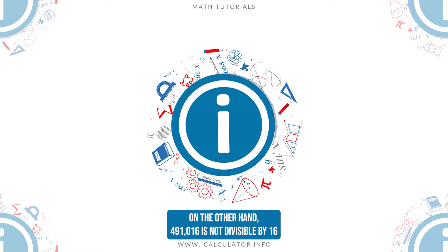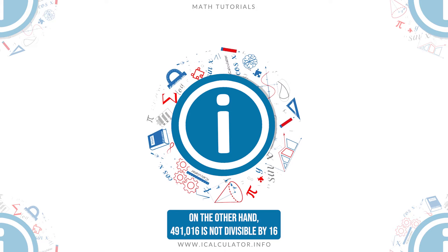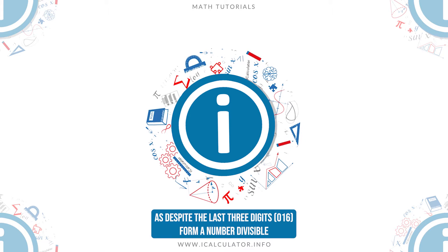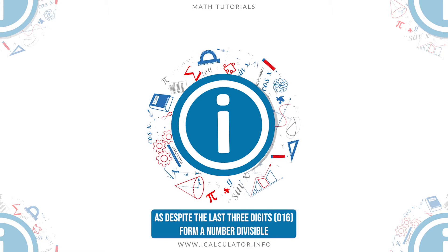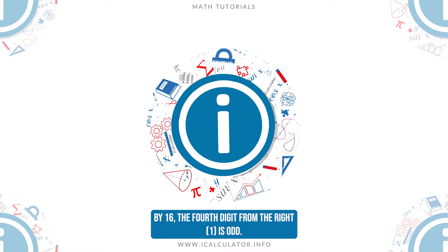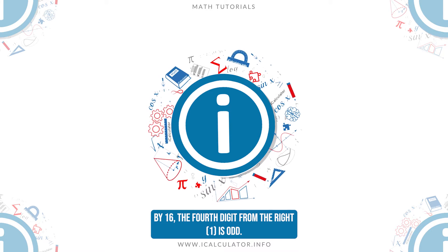On the other hand, 491,016 is not divisible by 16 as despite the last three digits, 016, form a number divisible by 16, the fourth digit from the right, 1, is odd.